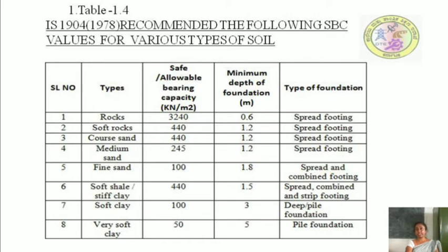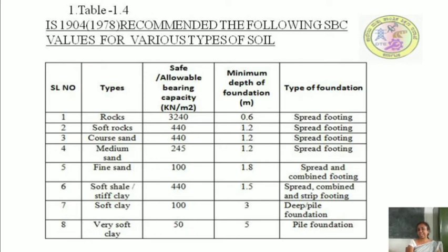For soft rocks, the allowable bearing capacity is 440 kN/m² with a minimum depth of 1.2 m, and the recommended foundation is spread footing — either stone masonry footing or isolated column footing. For coarse sand, the allowable bearing capacity is also 440 kN/m² with a minimum depth of 1.2 m, and spread footing is recommended as it is economical.